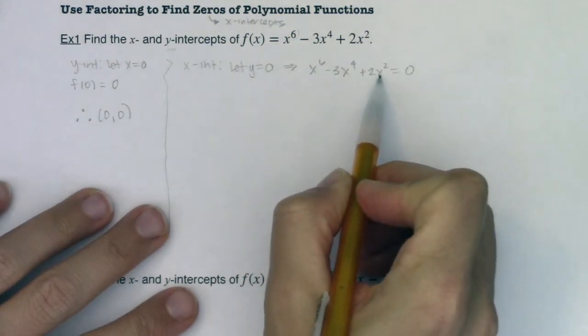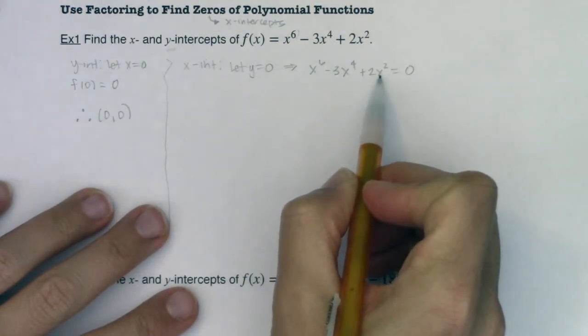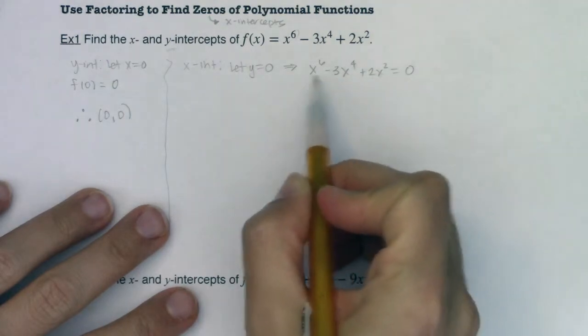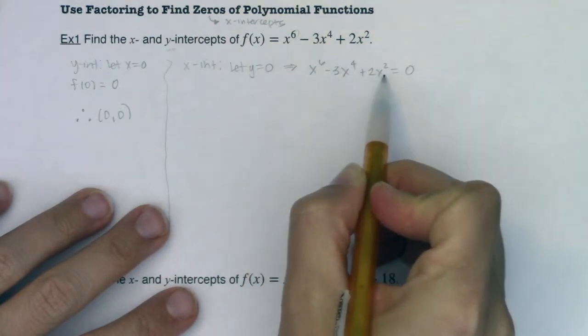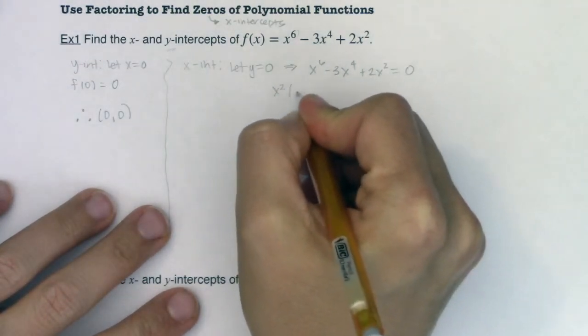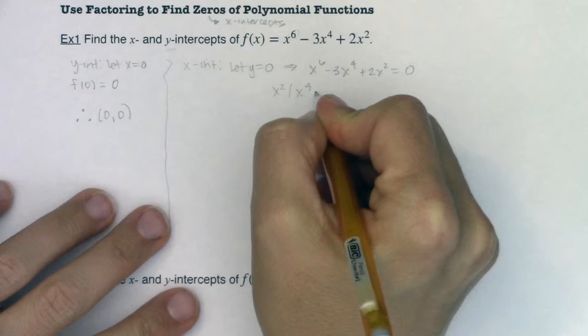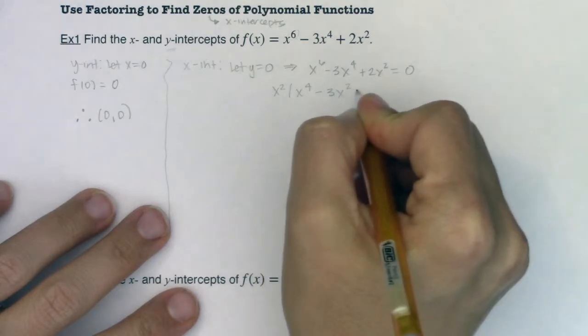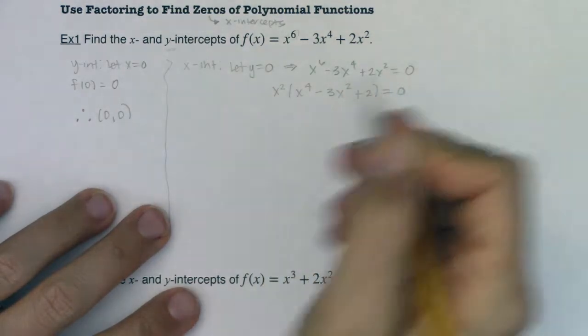First rule of factoring is to take out the GCF if it exists. And I do have a greatest common factor. I can at least see on the powers of x that they have an x squared in common. So let me factor out the x squared. That'll leave me with x to the fourth minus three x squared plus two being equal to zero.